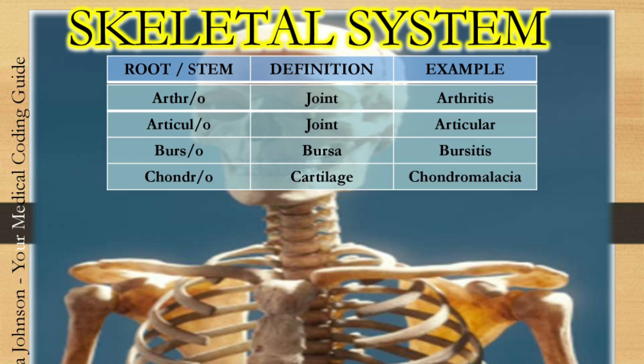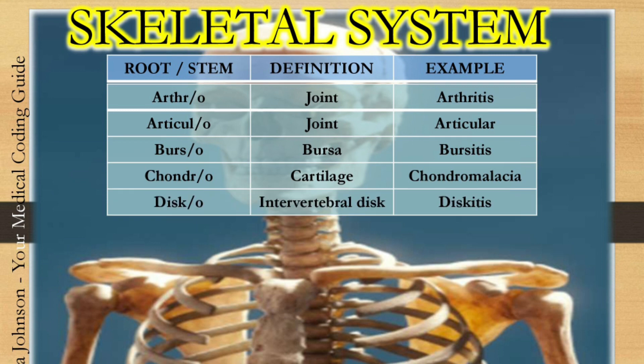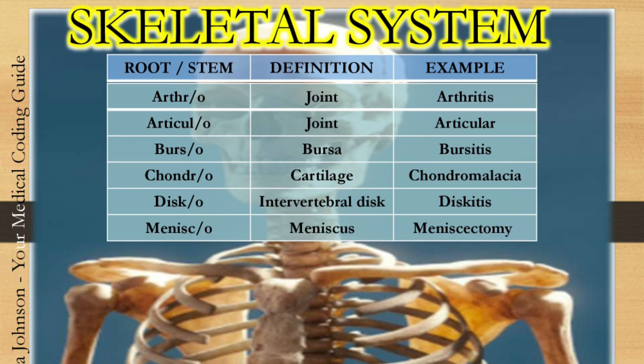The next one is chondro — chondro means cartilage. Example: chondromalacia. Malacia means softening, so chondromalacia means softening of the cartilage. The next one is disco — disco means intervertebral disc. Example: discitis, which is inflammation of the intervertebral disc. The next one is menisco — menisco means meniscus. Example: meniscectomy, which means excision of the meniscus.